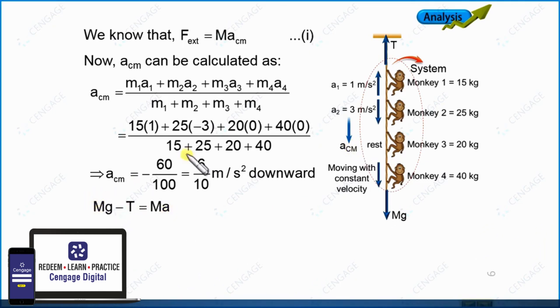Now we can substitute capital M equal to 100. We need to find T. Capital M is again 100 and a_cm we have calculated is equal to 0.6. So let us calculate the value of T. T is equal to 1000 minus 60, so it is 940 newton. This is the tension force and this tension force is also the force applied by the support on the rope.